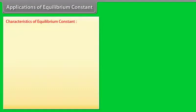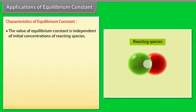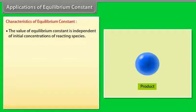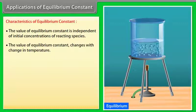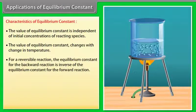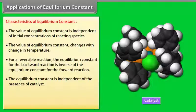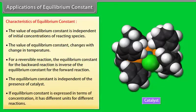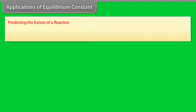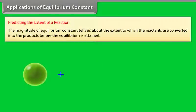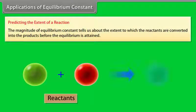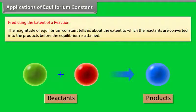Applications of Equilibrium Constant — Characteristics: The value of the equilibrium constant is independent of initial concentrations of reacting species. It changes with change in temperature. For a reversible reaction, the equilibrium constant for the backward reaction is the inverse of that for the forward reaction. The equilibrium constant is independent of the presence of a catalyst. If expressed in terms of concentration, it has different units for different reactions.